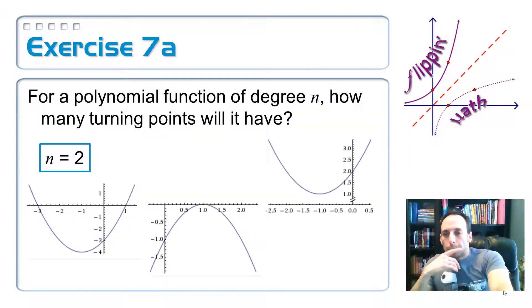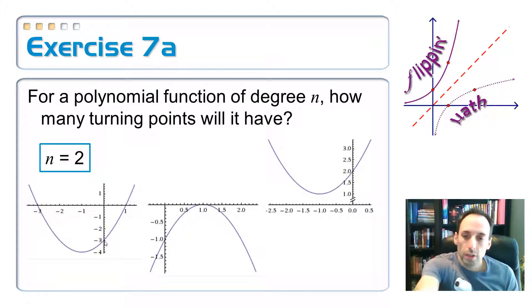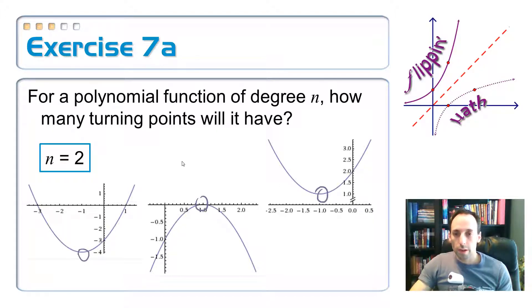So let's first talk about the turning points, the little humps for our graph. For a polynomial function of degree n, how many turning points should it have? So let's look at the second degree case. This is pretty easy because we've done this so much. We know that there's only one turning point, and that's the vertex. So you have one turning point. And the n value was two.